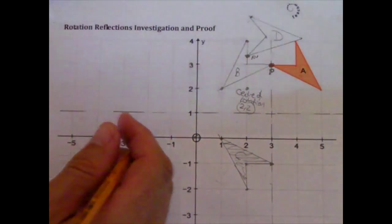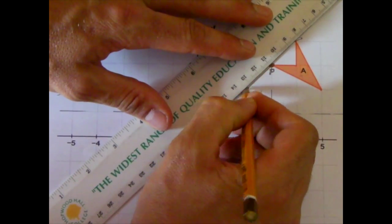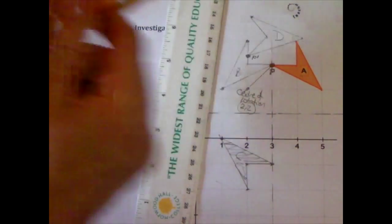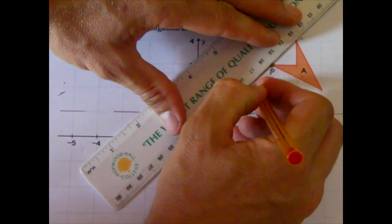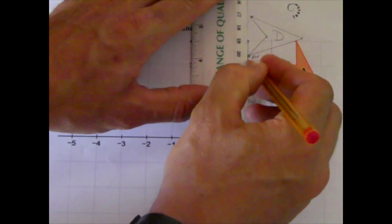You'll often see P dash, P double dash. So I need to draw from my center to that point a straight line. Let's take a red so we can really see that. And then I'm going to do the same to the new point, P dash, another red line.